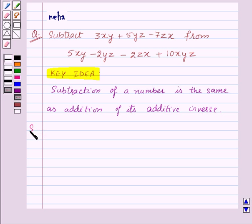Now, let us see its solution. We have to subtract first expression from the second expression. So, let us write second expression in the first row. Here 5xy minus 2yz minus 2zx plus 10xyz.